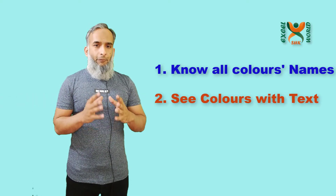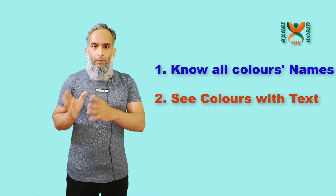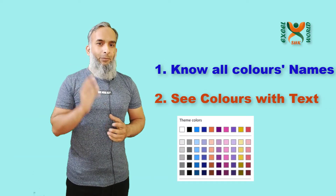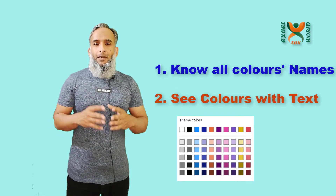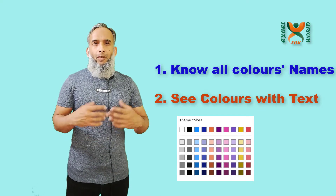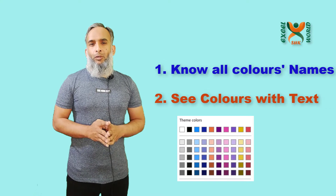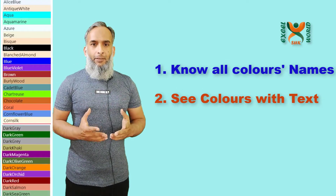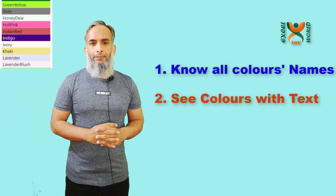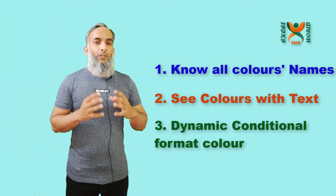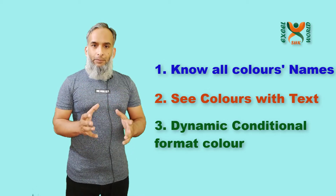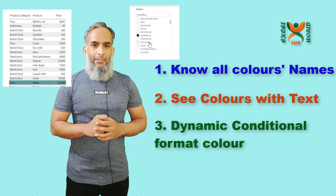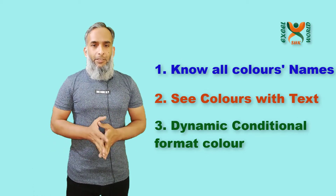Secondly, when you apply format on your items or values through the format option of Power BI, the colors appear in very small tiny boxes, so it is very difficult to imagine how your items will look unless you actually apply that color. So can we have those colors on a dashboard, clearly visible, so we know how our items will look? And third, is there a possibility to have a dynamic drop-down or dynamic table on a dashboard so we can click a specific color and have it applied to our matrix table through conditional formatting?